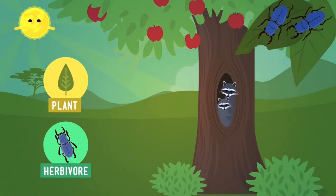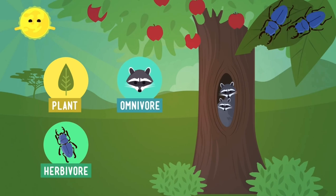The raccoon would be happy eating either the apples from the tree or the insects. Since it eats both plants and other animals, it's the omnivore in this situation.